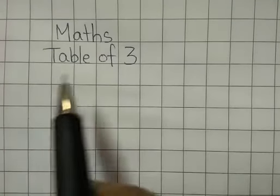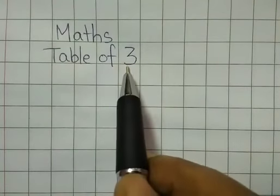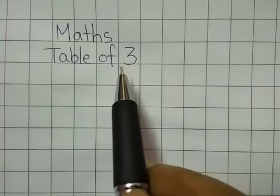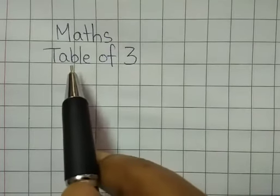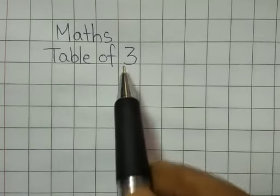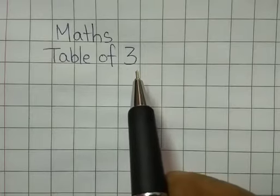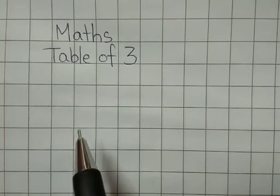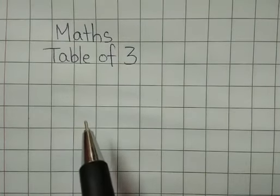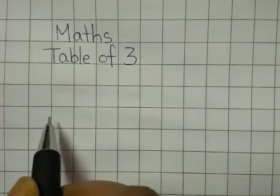Children, today we will learn the table of three. You have already learned the table of one and two. So let's learn the table of three. It is for oral — you have to learn by heart. But I will show you how to write the table. So let's start.